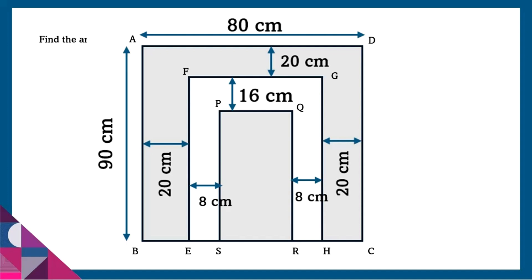To find the area, we need the length and breadth. To find the length of EF, we have to subtract 20 from 90, that is 70 centimeters. The breadth is equal to 80 minus 20 plus 20, which is equal to 40 centimeters. Now that we know the length and breadth of the unshaded region, it would be easy for us to calculate the area.